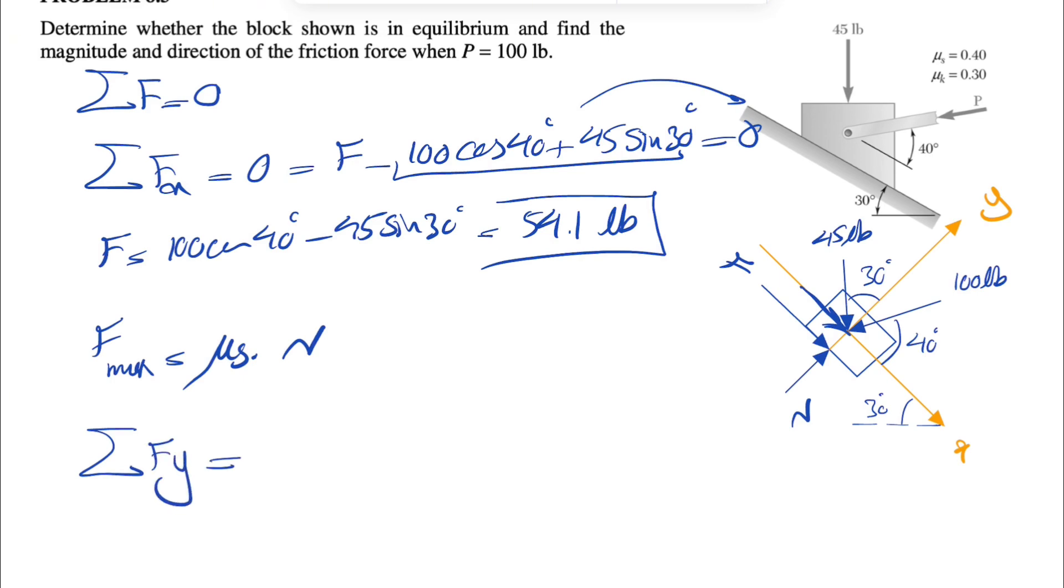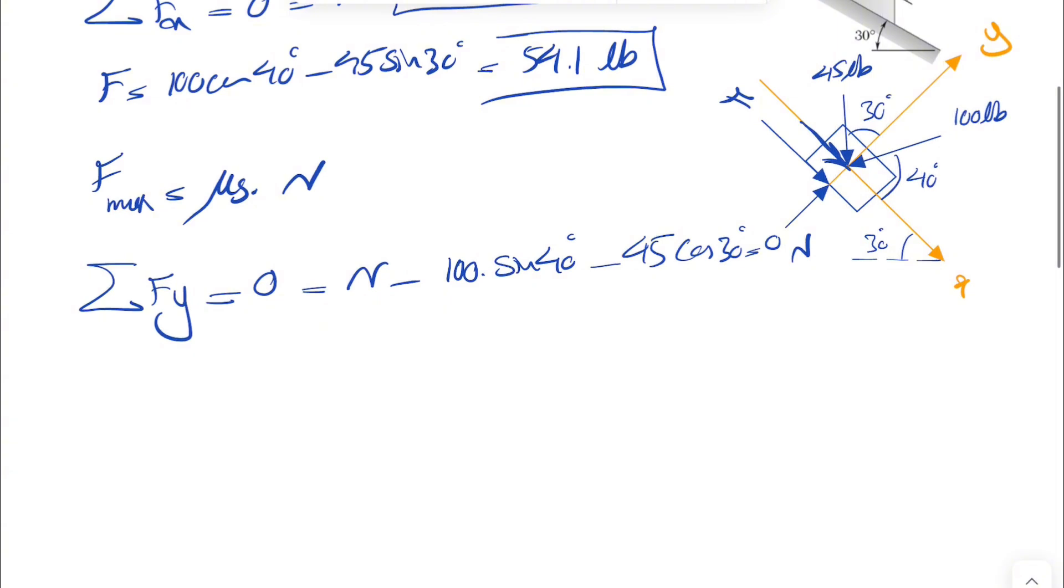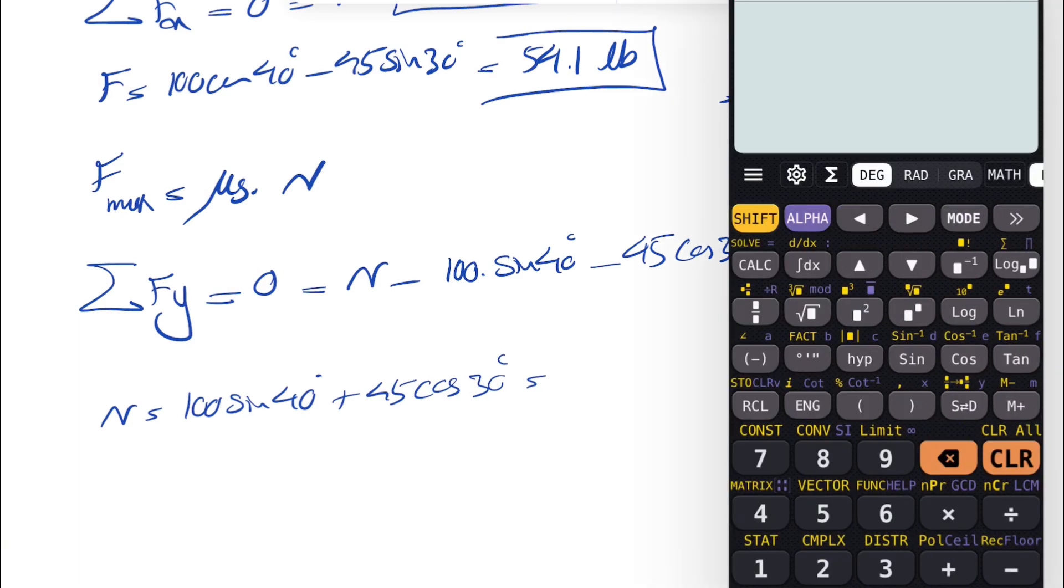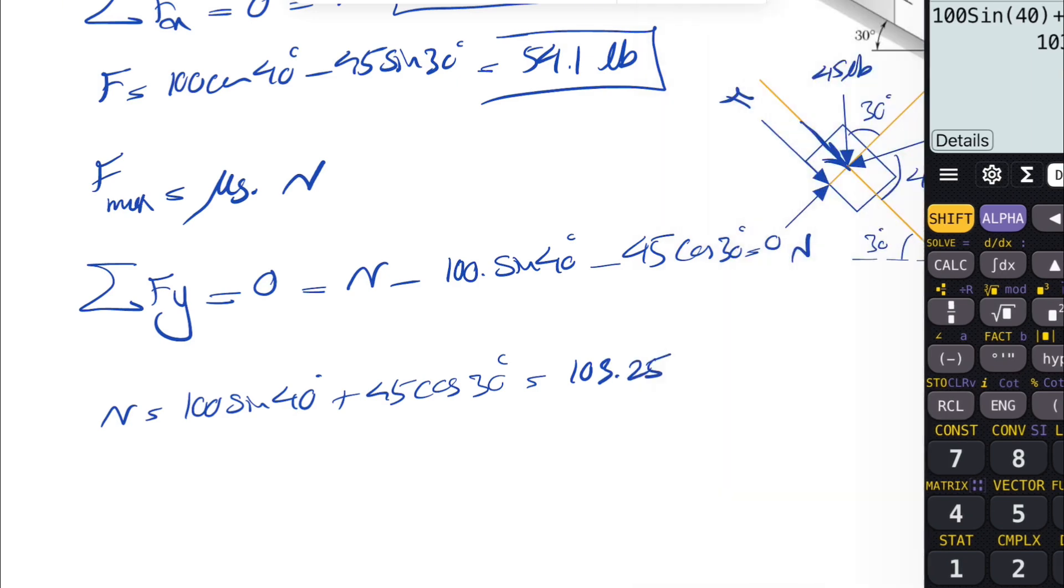We have one more equation, sum of all forces in Y. We have N minus the Y component of 100 pounds, 100 sine of 40. And we also have the Y component of 45. That one's downward to 45 cosine of 30 degrees equals zero. So the N would be 100 sine of 40 plus 45 cosine of 30 degrees. Let's see what we get. So that's going to give us 103.25 pounds.